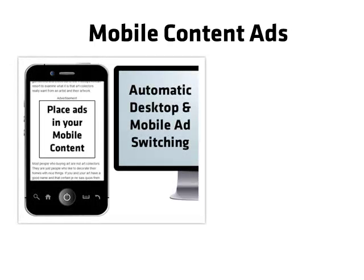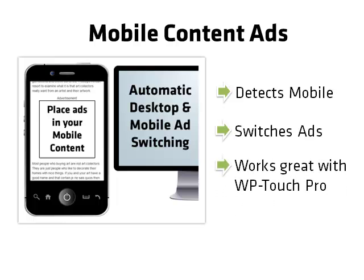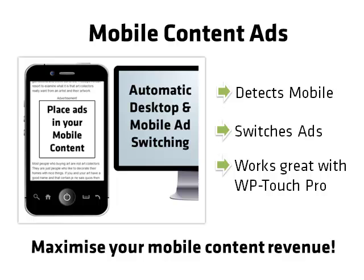Last but definitely not least is one of the coolest features of Click Missile: mobile content ads. These days more and more people are browsing the web on their phones. And if your site is serving up the wrong sized ad to their mobile phones, or no ads at all, you could be missing out on mobile ad revenue. Click Missile has the ability to detect when a visitor is using a mobile smartphone and automatically switch your ads to ads of a more suitable size for your mobile content. This feature works great with mobile WordPress plugins such as WP Touch Pro and enables you to maximize your ad revenue by injecting the right sized ads direct into your mobile content.